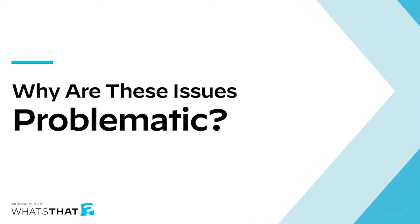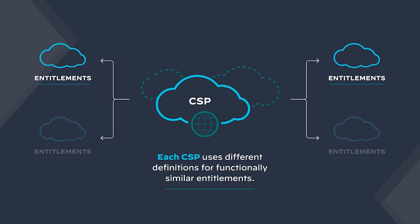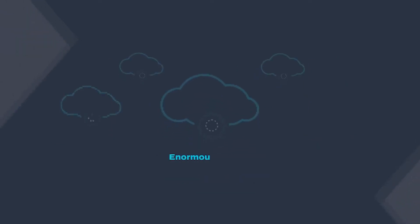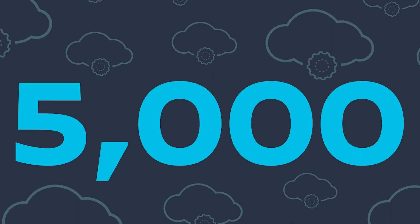Companies aren't providing excessive access on purpose — there are several factors that make it difficult to calculate that minimum level of access. First, each cloud service provider, or CSP, uses different definitions for functionally similar entitlements, and there are in fact competing and even overlapping controls within and across CSPs. Then there is simply an enormous number of entitlements out there. In a June 2021 report from Gartner, it was noted that on average there are over 5,000 distinct entitlements for any given CSP. Manually calculating how any one of those entitlements affects a user's permissions is an incredibly tedious challenge, let alone across hundreds of users, and those calculations have to account for the fact that these cloud environments are constantly shifting along with the entitlements associated with them.